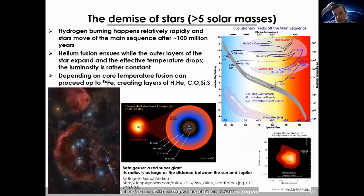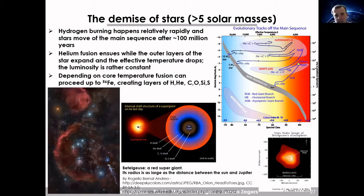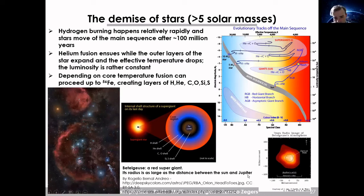Neutrinos can come from stars, making them very interesting for learning about stellar physics. For the heaviest stars — larger than about five solar masses — hydrogen burning happens relatively rapidly, and after about 100 million years the star starts to move off the main sequence. Helium fusion then starts while the outer layers expand and the temperature drops. Depending on the core temperature, fusion can proceed and create heavy elements up to iron-56, at which point fusion can no longer continue because no more energy is produced.